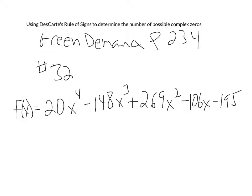A review from that first video: how many positive real solutions or zeros could there be for this polynomial? I'm counting one sign change, two sign changes, three sign changes. So that tells me there could be three positive real solutions.